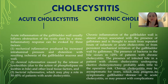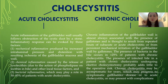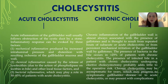Cholecystitis is divided into acute and chronic conditions. Acute cholecystitis is acute inflammation of the gallbladder wall that usually follows obstruction of the cystic duct by a stone. The inflammatory response can be evoked by three factors: first, mechanical inflammation produced by increased intraluminal pressure and distension with resulting ischemia of the gallbladder mucosa and wall; second, chemical inflammation caused by the release of lysolecithin and other local tissue factors; and third, bacterial inflammation, which may play a role in 50–85% of patients with acute cholecystitis.